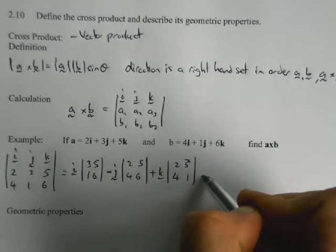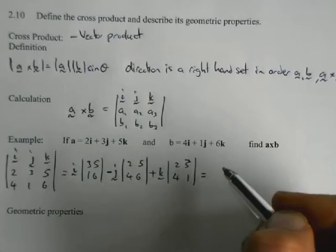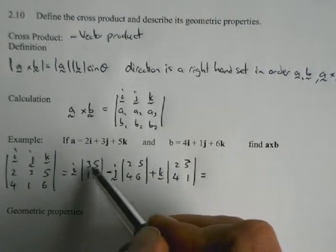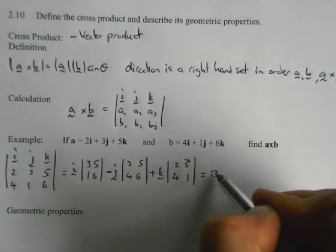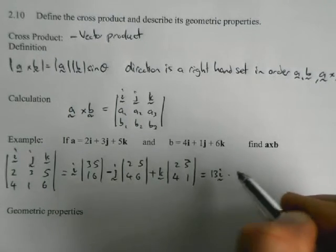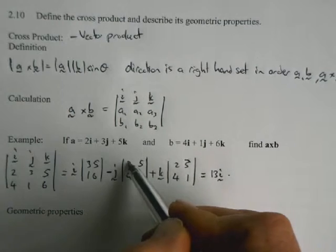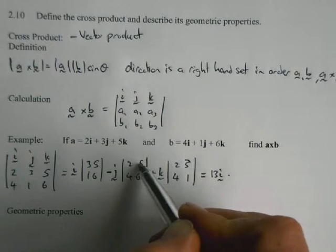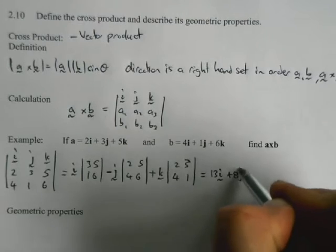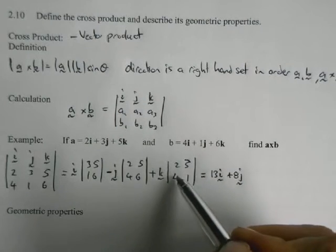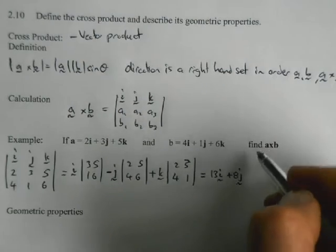So for the first one, 3 times 6 is 18, minus 5 is 13, minus 12 take away 20 is negative 8, and minus negative 8 is positive 8. And then we've got 2 take away 12 is negative 10.